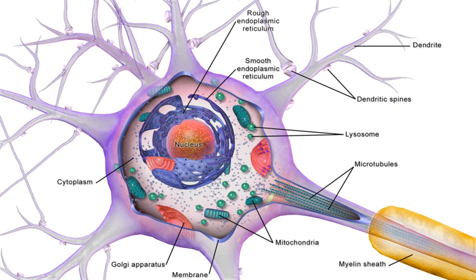The axon hillock is a specialized domain of the neuronal cell body from which the axon originates. A high amount of protein synthesis occurs in this region, as it contains a large number of Nissl granules, which are ribosomes wrapped in RER, and polyribosomes. Within the axon hillock, materials are sorted as either items that will enter the axon — like the components of the cytoskeletal architecture of the axon, mitochondria, etc. — or will remain in the soma.